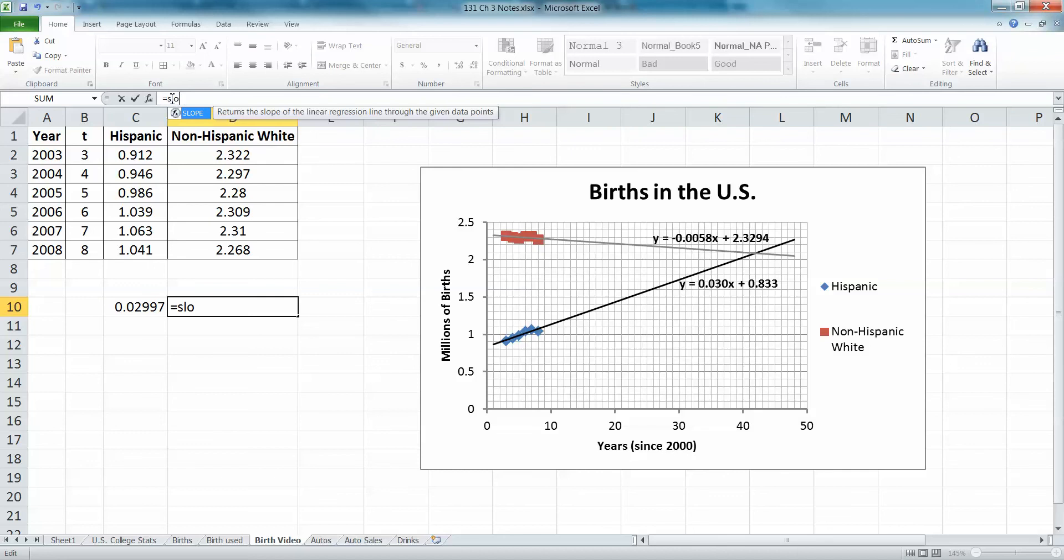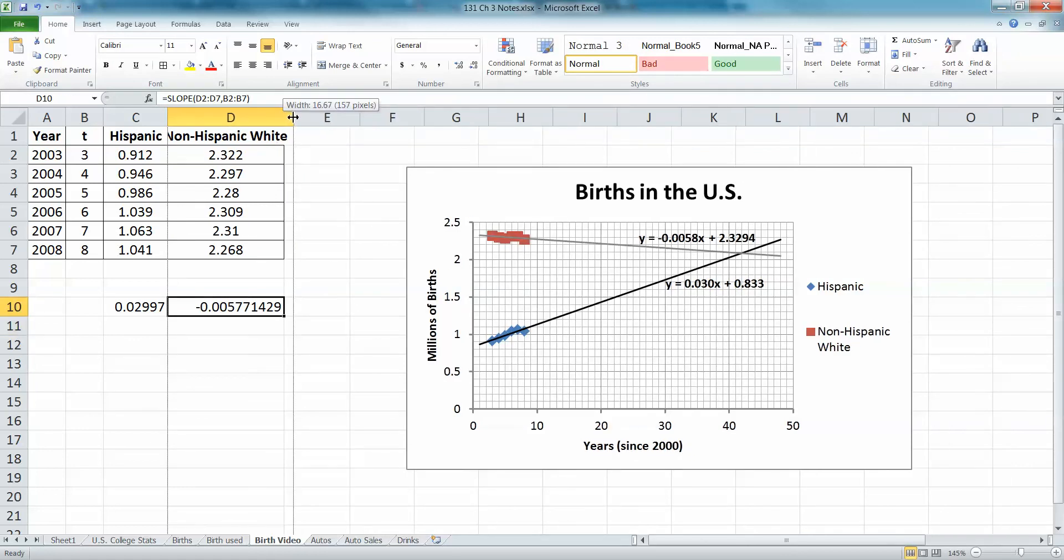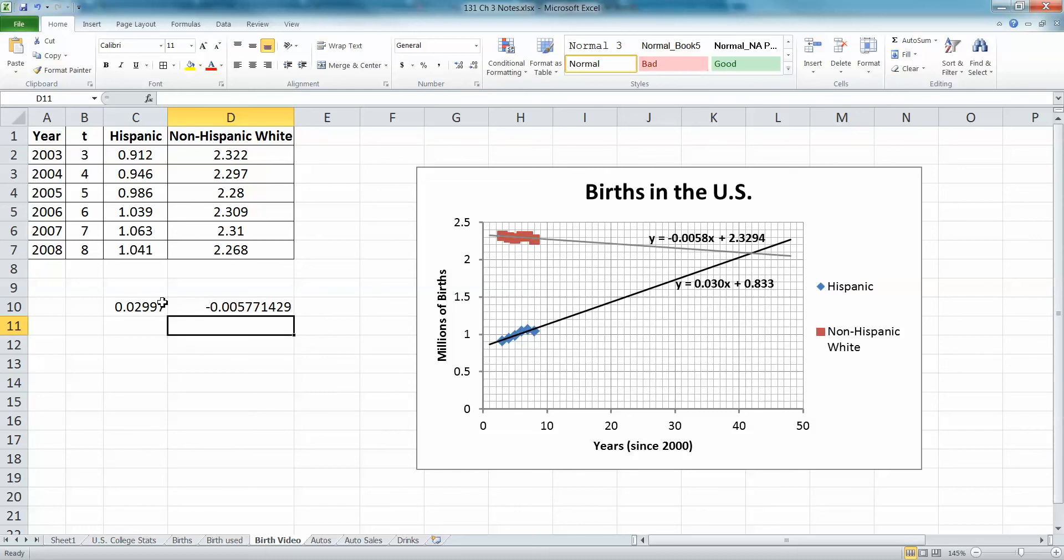Then you can do it again. You can say equals slope, and then this time I'll use these y's, comma, same x's as before. There you go, negative 0.058. Right? A little bit of rounding, but other than that, okay.